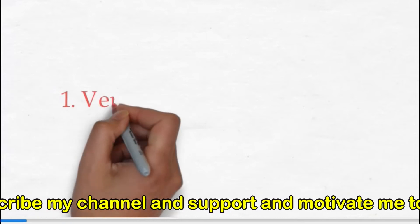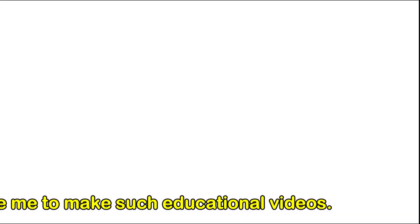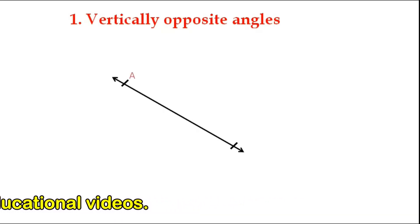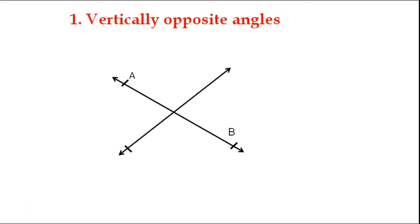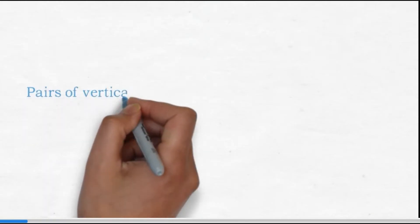First: vertically opposite angles. Two lines AB and CD intersect each other at point O, making four angles. From the figure we can see angle AOD and angle BOC — they form one pair of vertically opposite angles. Angle AOC and angle BOD form the second pair of vertically opposite angles. Pairs of vertically opposite angles are always congruent.